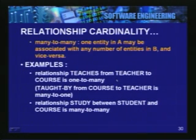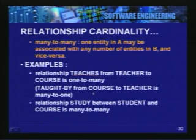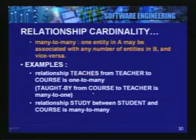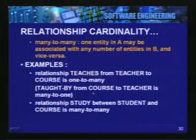Let us look at some examples. Take the relationship called 'teaches' between the entity Teacher and the entity Course. The cardinality is one-to-many: one teacher may teach many courses, but for a given course there is one teacher. One-to-many indicates that a teacher may teach many courses whereas a course is always taught by one teacher. As you can see, the relationship gives you more information about how many entities are relating to each other in a given environment.